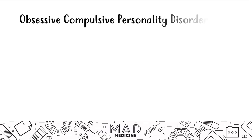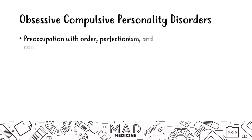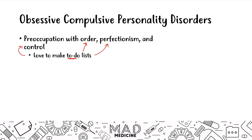Finally, we have obsessive compulsive personality disorder, or OCPD. In OCPD, people are preoccupied with order, perfection, and control. They love to make to-do lists. This is a very egosyntonic behavior, meaning it is consistent with one's own beliefs and attitudes, and it's actually very beneficial — the order, perfection, and control can help you study, get tasks done faster and more effectively. Pre-med and medical students are a perfect example of this. Don't get it mixed up with OCD — this is OCPD.